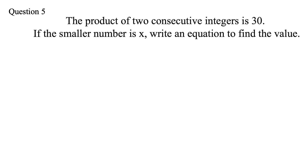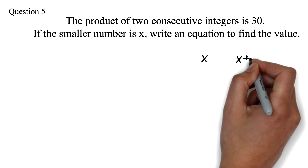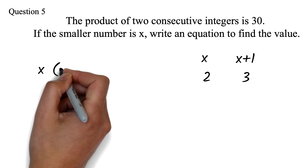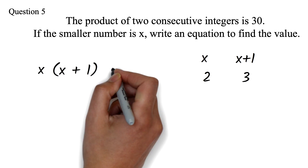Question 5: The product of 2 consecutive integers is 30. If the smaller number is x, write an equation to find the value. This is the same as question 4, just harder. For consecutive integers, if the smaller number is x, then the next number will be x plus 1. So if x is 2, then the next number will be 2 plus 1, which equals 3. Product means multiplication. So we have the smaller number x times the next number x plus 1, equal to 30.